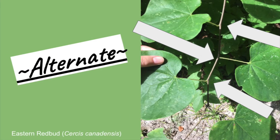Here we have an eastern redbud and its leaves are arranged alternately on the stem. The arrows are pointing to where the leaves are attached at the nodes. You can see only one leaf is attached and they are alternating in an ascending spiral. So let's keep exploring and see what else we can find.